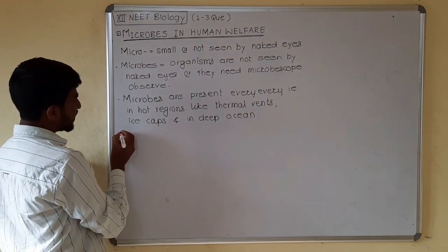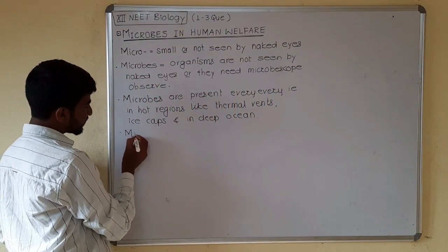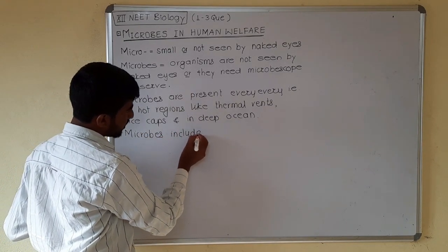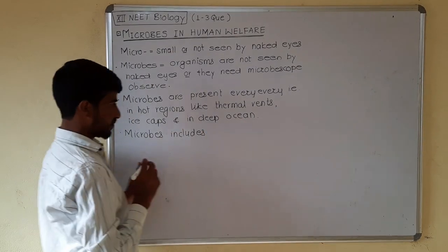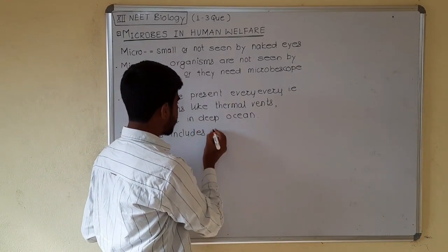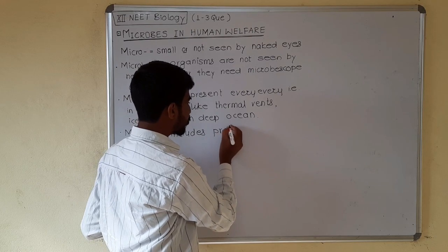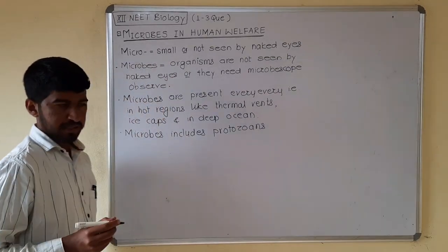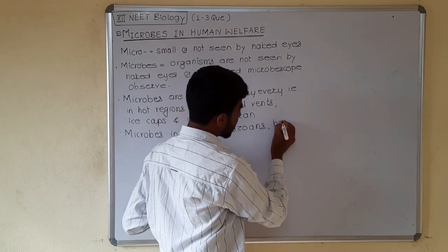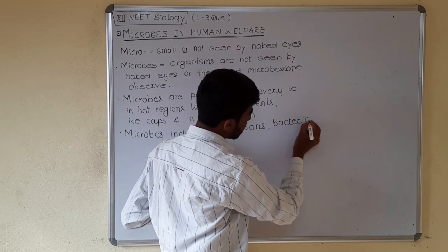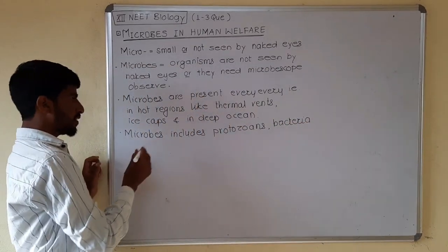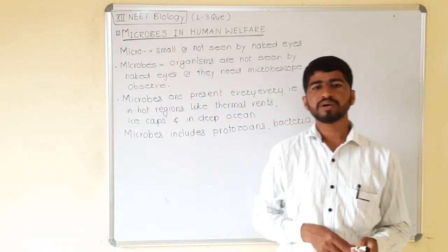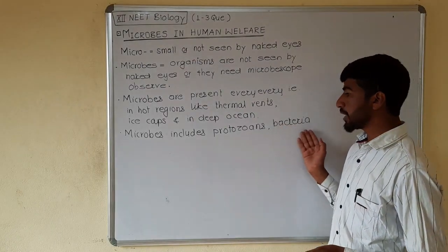Microbes include: protozoans, which are unicellular eukaryotes; bacteria, which are prokaryotic organisms. Bacteria include archaebacteria, eubacteria, cyanobacteria, and also mycoplasma.